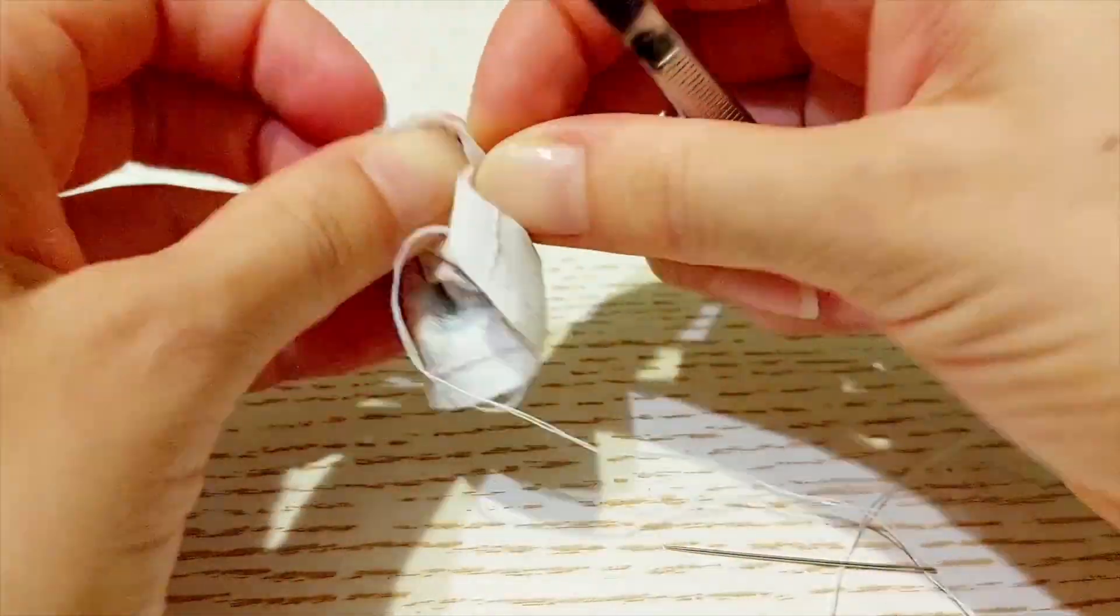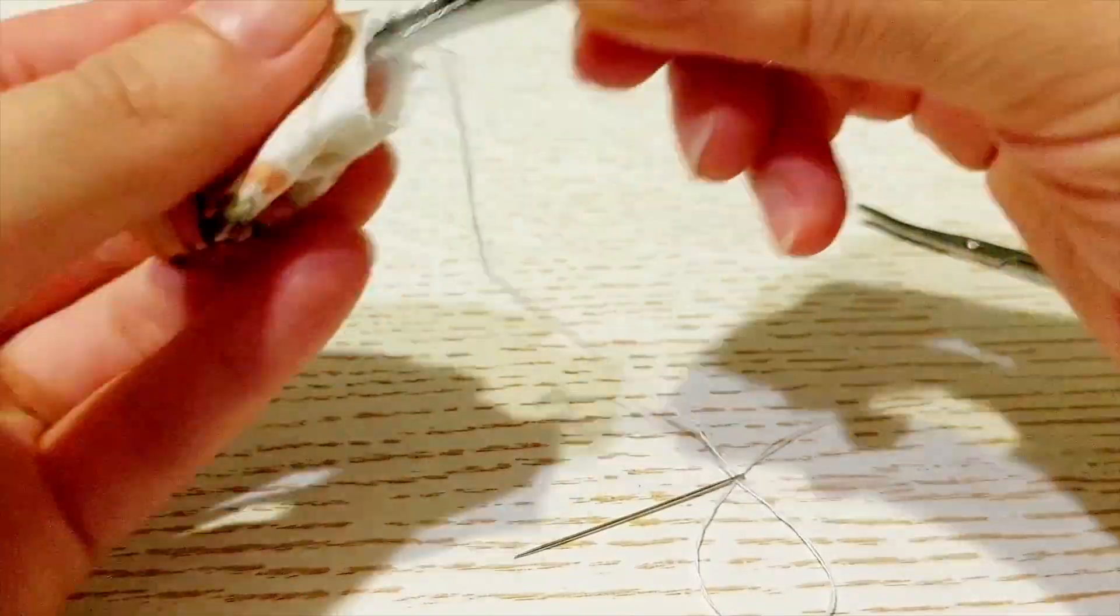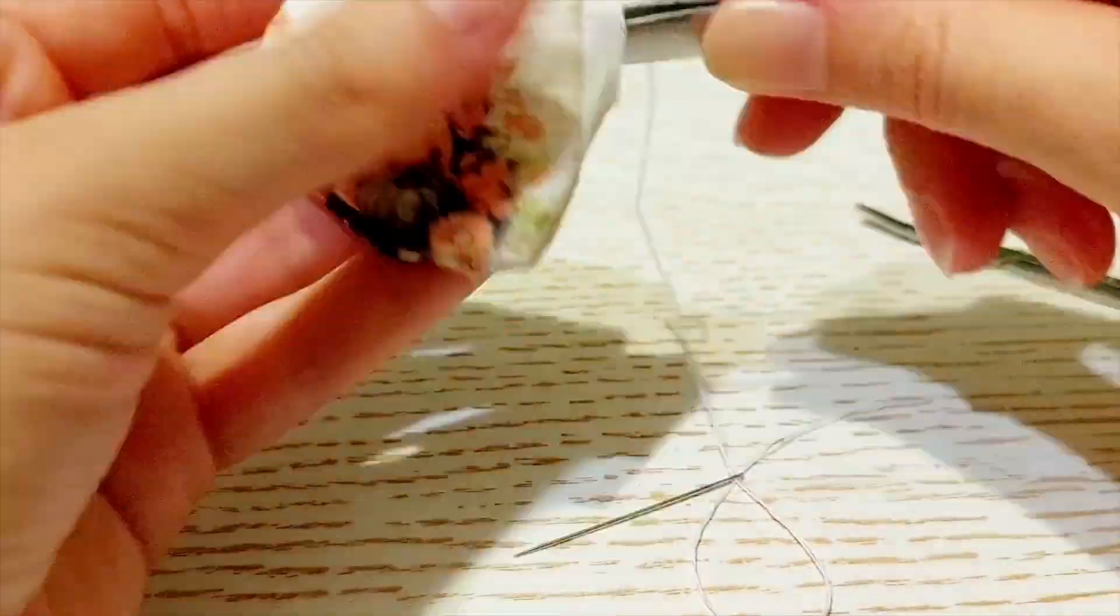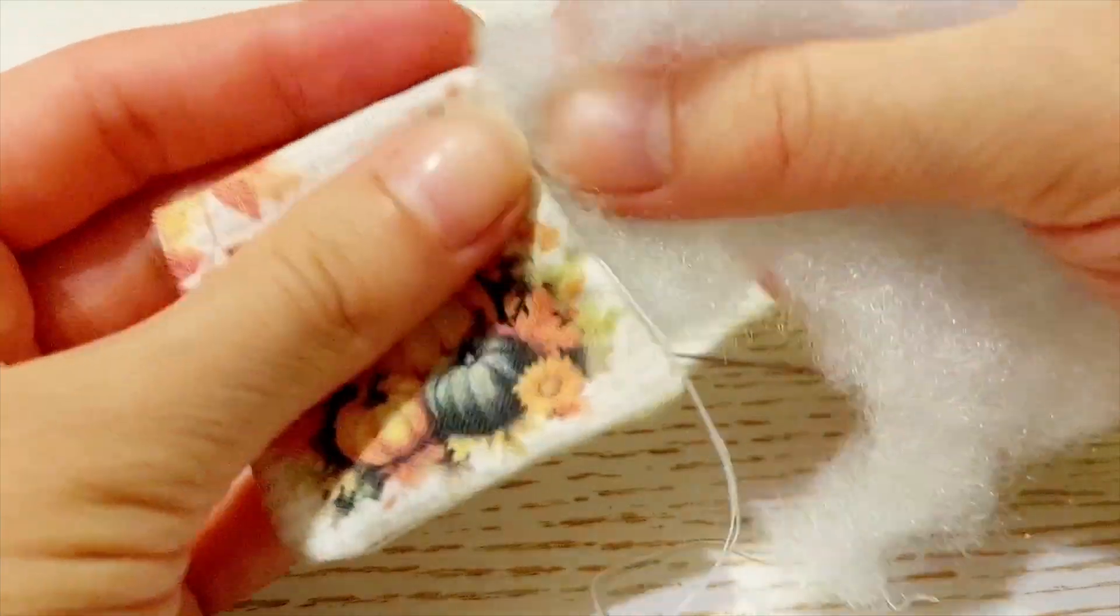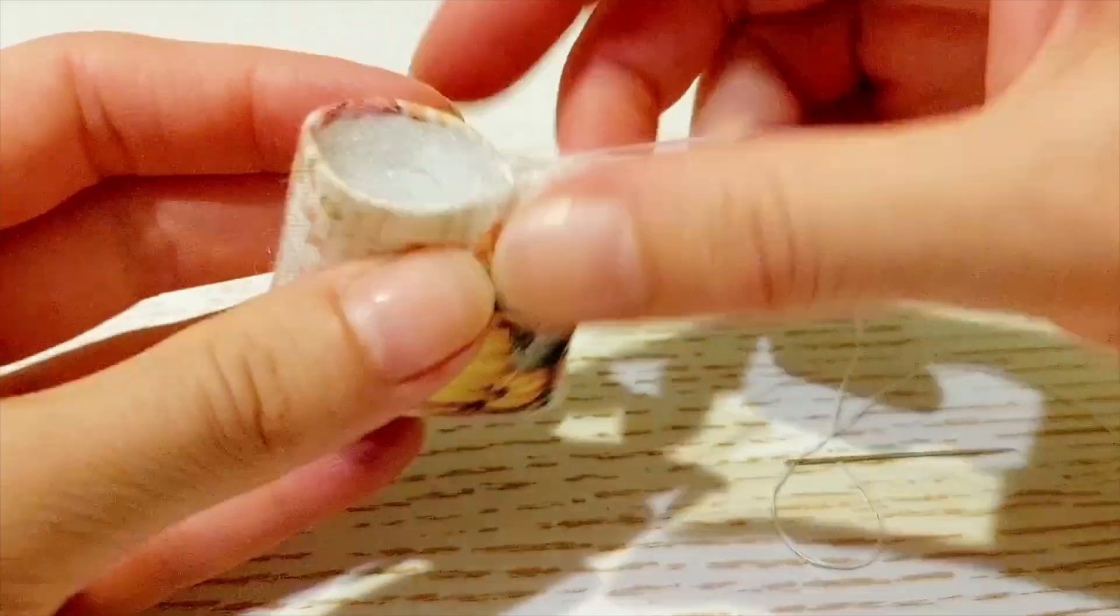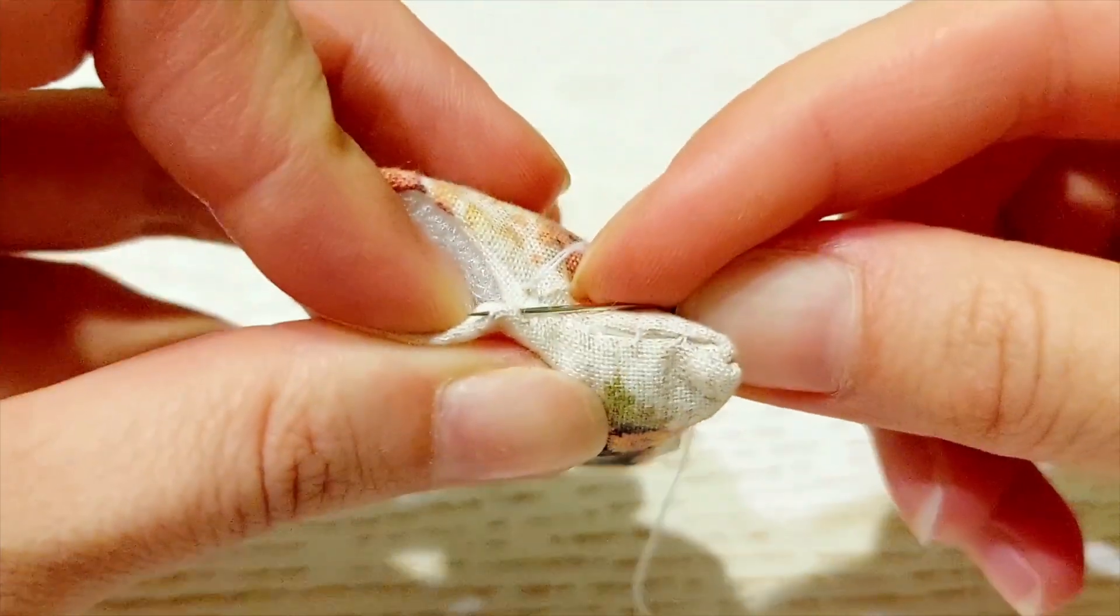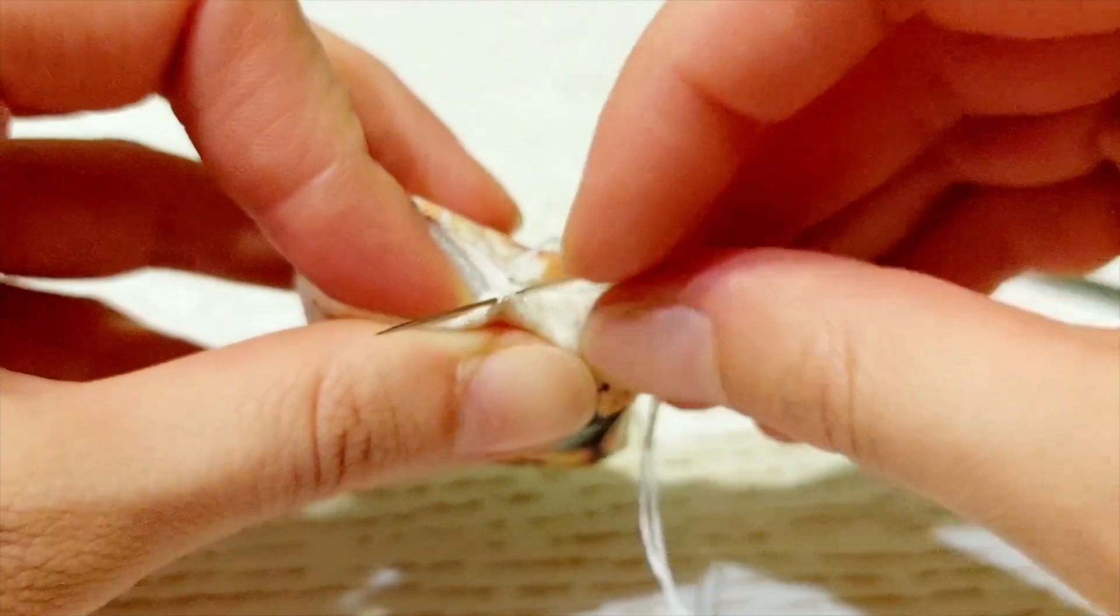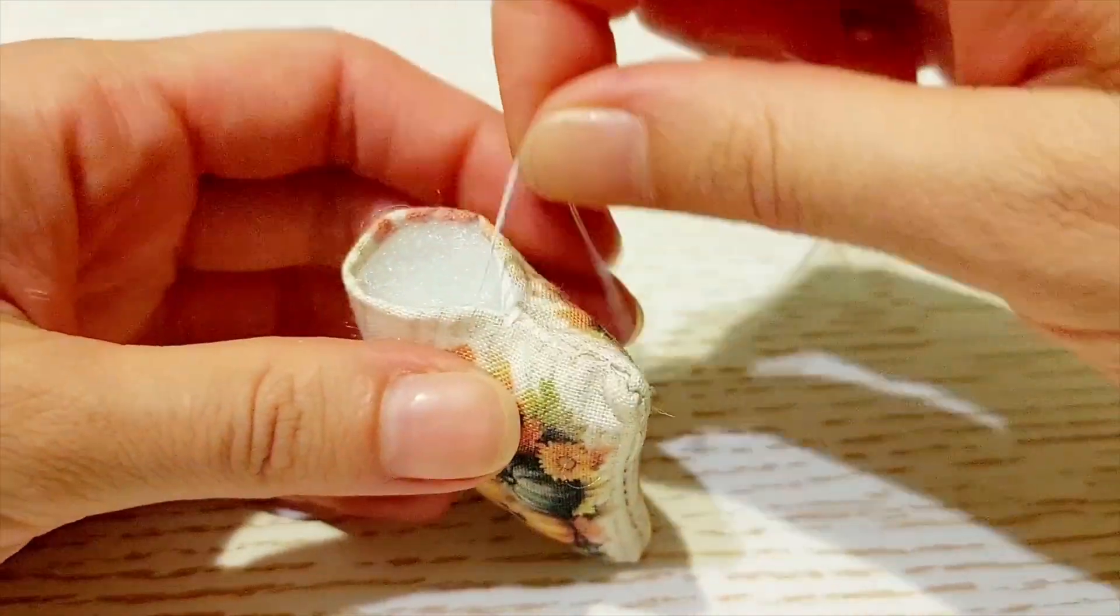Flip the fabric inside out and fill the pillow with cotton or polyfill. Once it is stuffed, seal the opening closed using an invisible stitch.